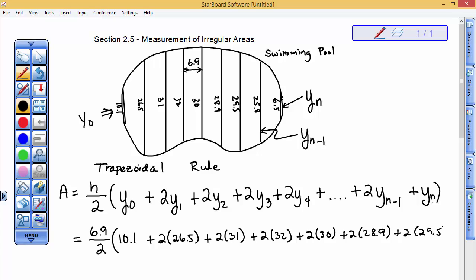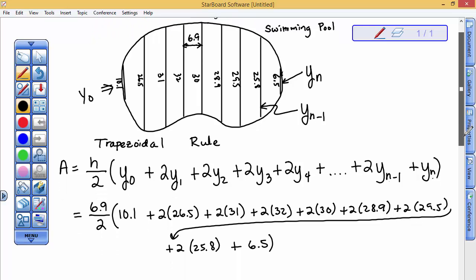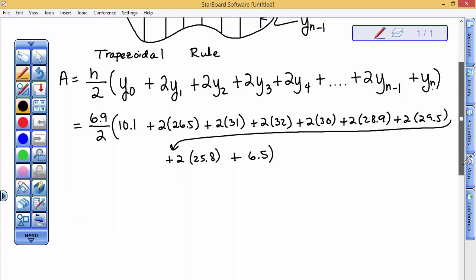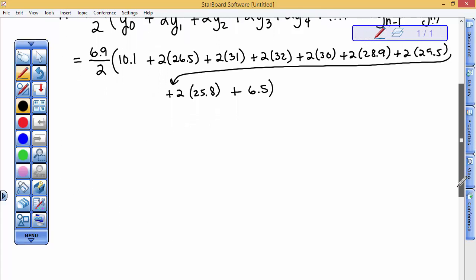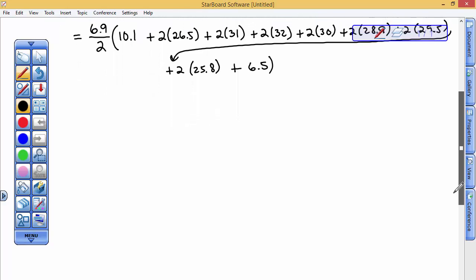And then I'm going to have plus 2 times the 25.8. Finally, the last line, 6.5, does not get a 2 multiplied by it. Alright, let's demonstrate the calculation of this using our calculator. I'm going to see if I can get both the calculator on the screen and most of this. Let's see how I do. I'm not sure it's going to be possible.